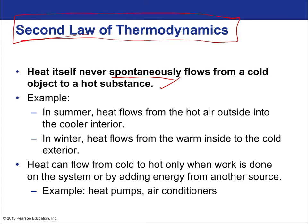In the summer, heat flows from the hot outside air into the cooler interior of the house. In the winter, heat flows from the warm inside to the cold exterior — always from hot to cold. Heat can flow from cold to hot only when work is done on the system or by adding energy from another source. You can absolutely pump heat, but that requires outside work — it is not spontaneous. Heat pumps and air conditioners require outside energy and can force heat to flow in the opposite direction.